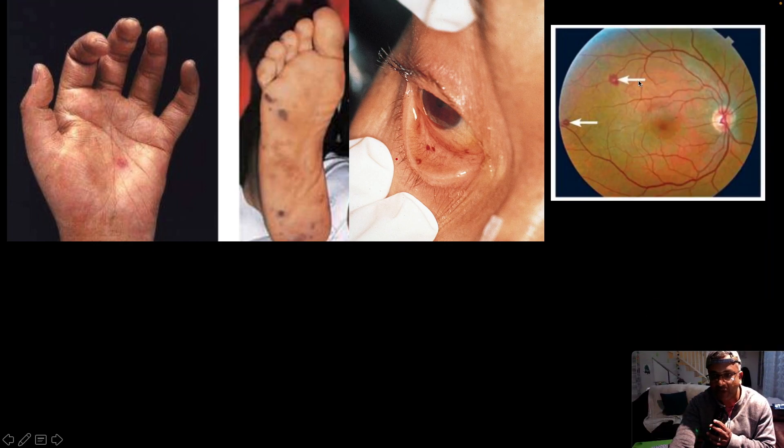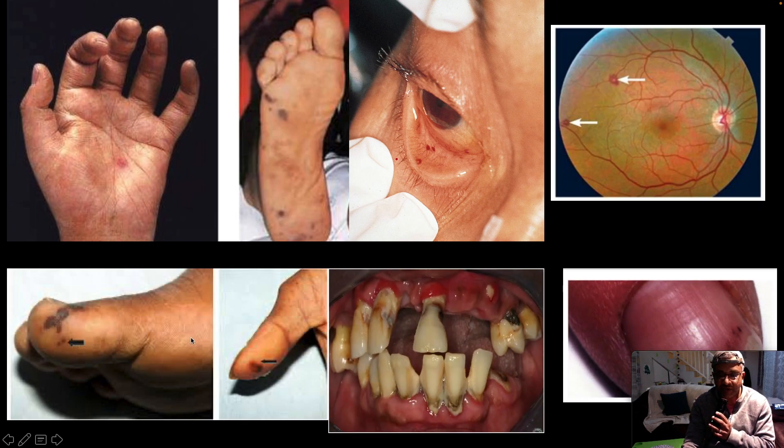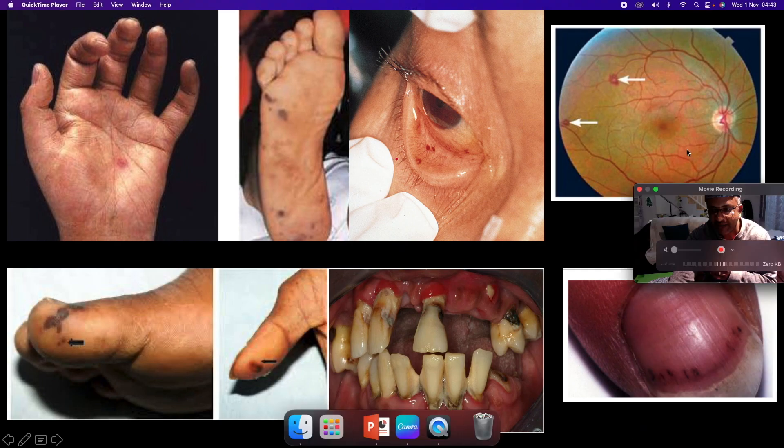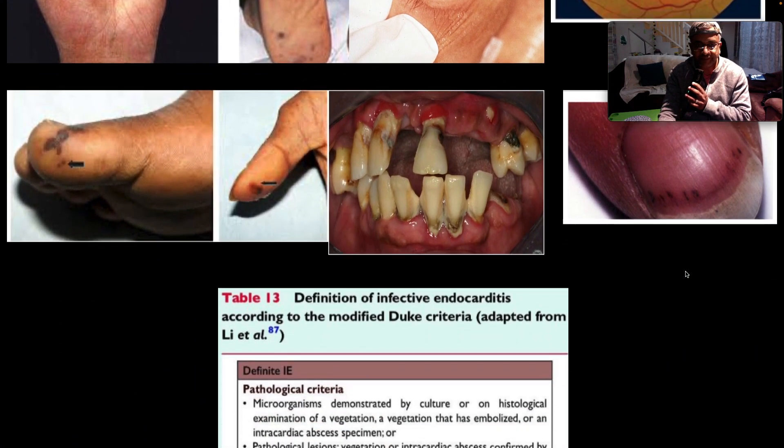This is an example of Roth's spot. You can see it's a vasculitic lesion with a pale center. These are Osler's nodes, which are raised, palpable, and they are painful. This is an example of poor dentition. These are splinter hemorrhages which we can appreciate here.